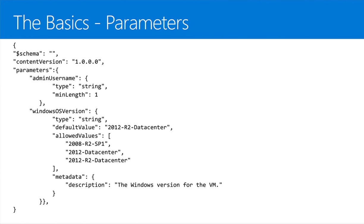The parameters section is what you'd expect — you can pass in parameters to reuse a template. In this example, you can pass in a username, information about an operating system version, and set a default value so every template uses Windows Server 2012 R2 Datacenter, but allow people to pick from allowed versions. You can also have metadata so tools can make a richer experience.